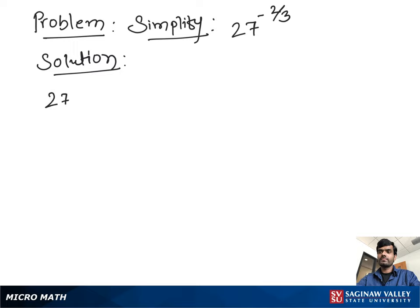Simplify 27 raised to negative two-third power. First, we need to make the negative exponent positive, so we move 27 to the bottom and write 1 over 27 raised to positive two-third power.